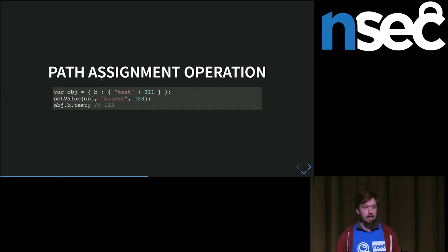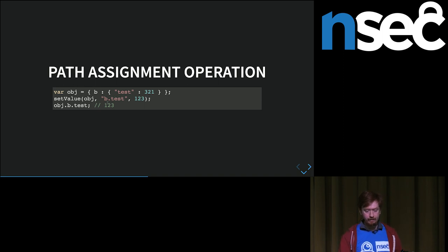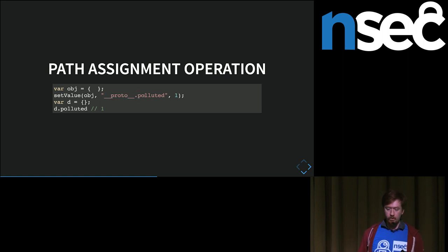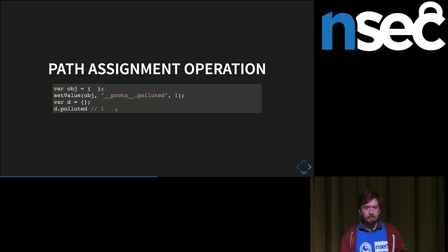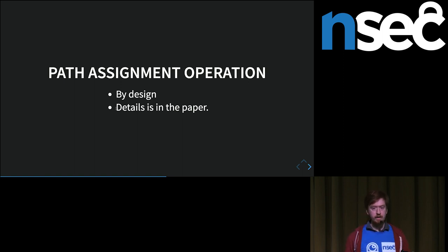The third interesting class is a bunch of libraries which allow values to be defined by a path. Basically, you start with an object and some API allows setting a property like object.b.test by defining a path. If the attacker can control part of the path, they can define it as __proto__.polluted, and if they also control the value, the prototype of Object is going to be polluted. For these libraries this is essentially working by design, so it's highly unlikely there will ever be a patch. You have to be very careful never to allow the path to be fully controlled by user input.